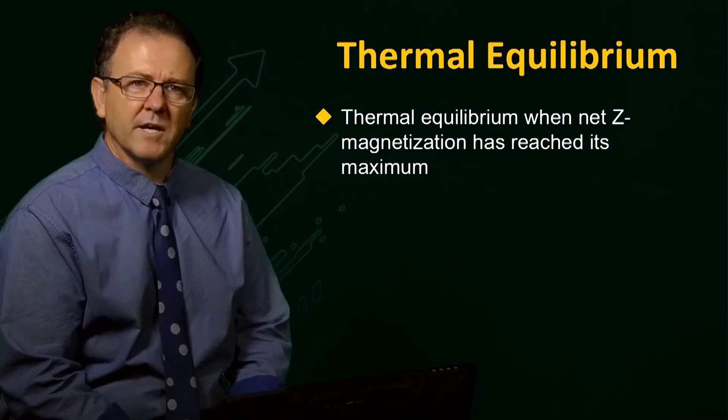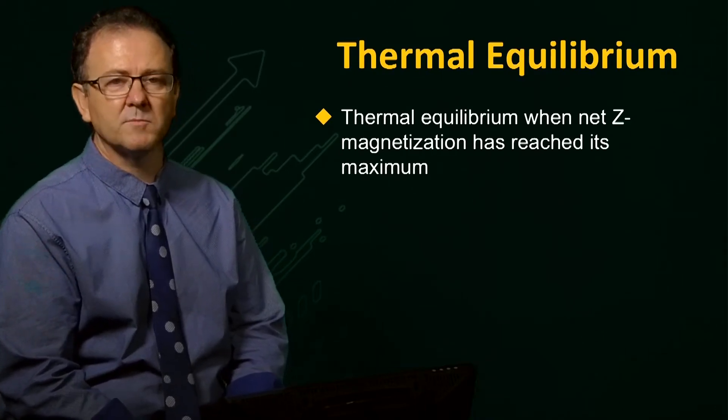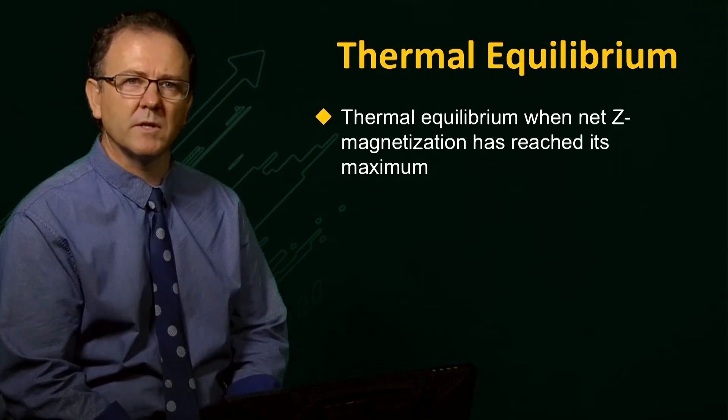When the net magnetization has been fully established along the direction of the magnetic field B0, according to the Boltzmann distribution, the system is said to be in thermal equilibrium.